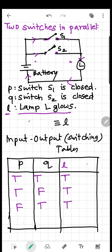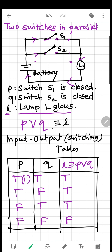If both switches are open — P false and Q false — the lamp will not glow, so the output is false. Looking at the truth table, this is nothing but the truth table of P OR Q. Therefore, when two switches are in parallel, they perform the operation of OR. Instead of using true and false, we should use 1 and 0.